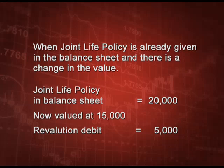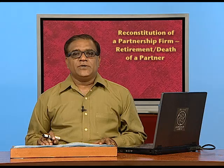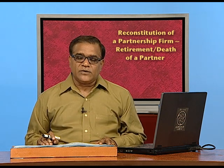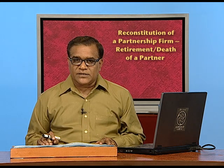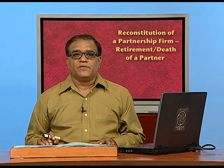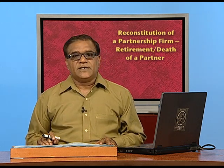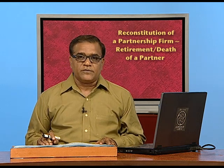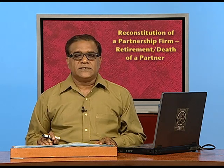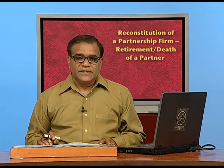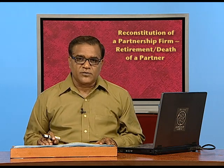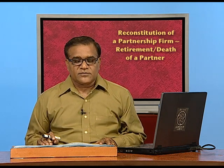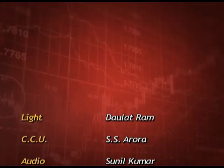In today's discussion we have understood how to calculate and adjust goodwill, how to calculate the amount payable to a retiring partner, the provisions of section 37 of the Indian Partnership Act - which says you can get a proportionate share or 6 percent per annum, whichever is greater - and all three cases of joint life policy treatment in retirement. In the next class, we are going to discuss death of a partner and how to calculate profits on the basis of turnover. Till then, goodbye and thank you.